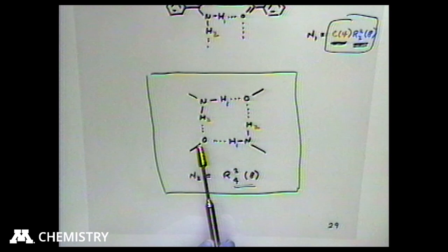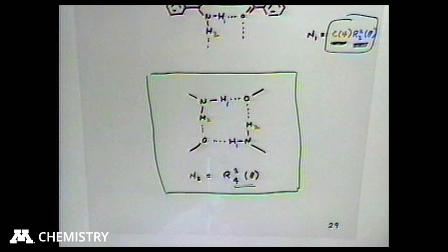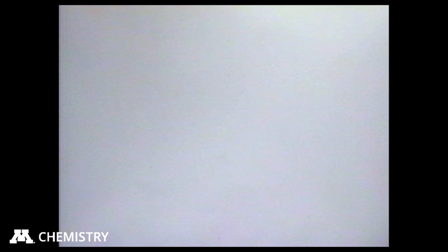This pattern occurs in many co-crystals, peptides, and amino acids — any time you have a primary amine or amide and a carbonyl, phosphoryl, or sulfonyl. It's one of the most common organizing patterns of organic molecules, and it was essentially unknown before graph set analysis revealed it.